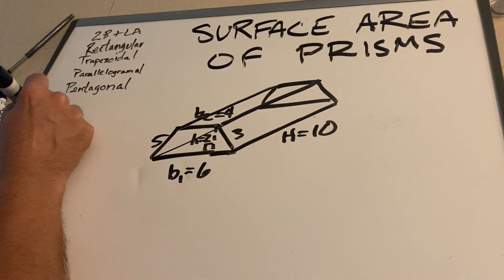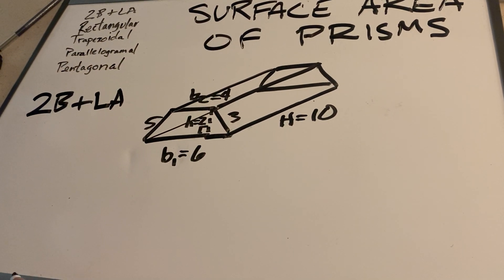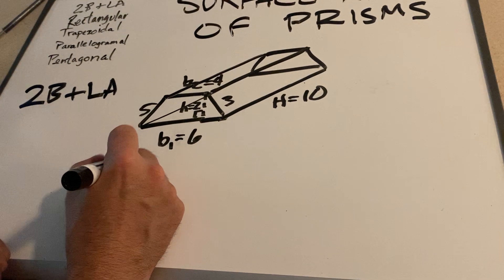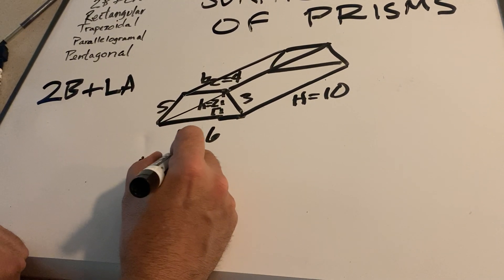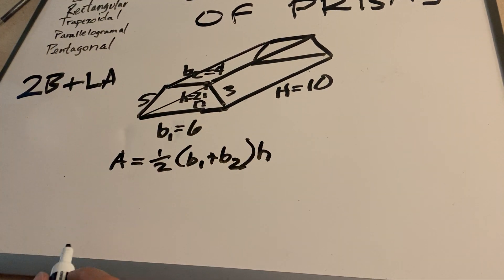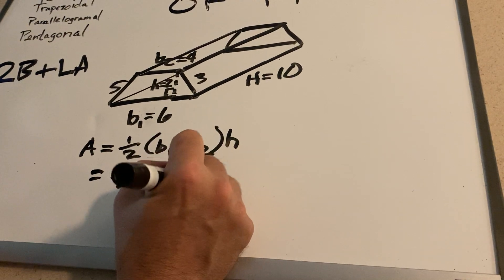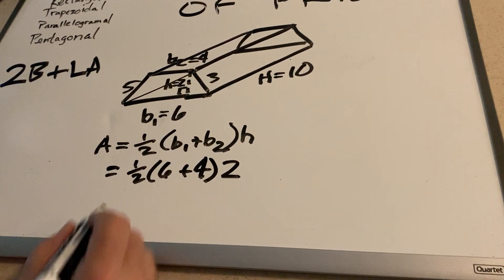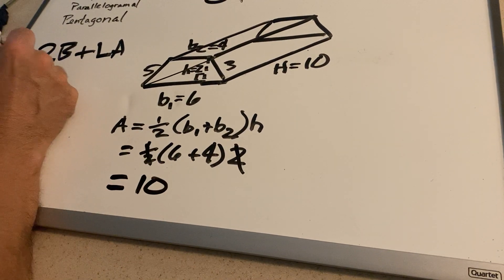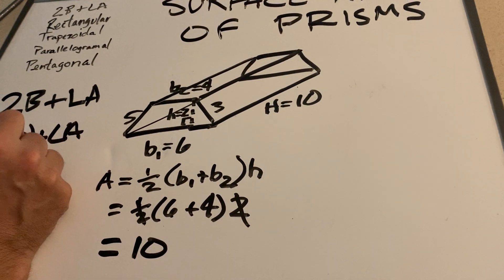Again, our formula is 2B plus the lateral area. First, let's calculate the area of this base. Remembering our formula for the area of a trapezoid: area of the base equals one-half times (base 1 plus base 2) times the height of the trapezoid. We fill in these values: one-half, base 1 is 6, base 2 is 4, and the height of the trapezoid is 2. One-half times 2 cancel each other out, and we wind up with the area of the base equal to 10. So 2B is 2 times 10, or 20, plus the lateral area.